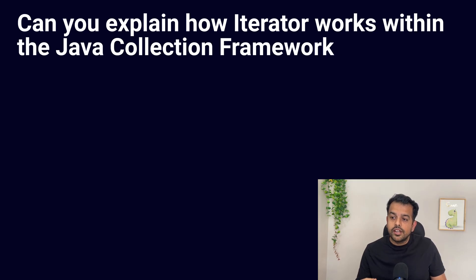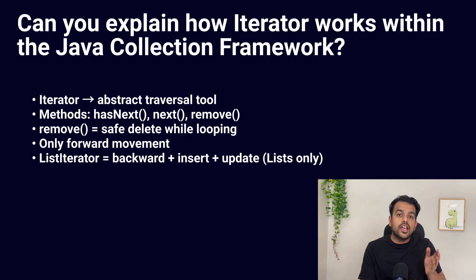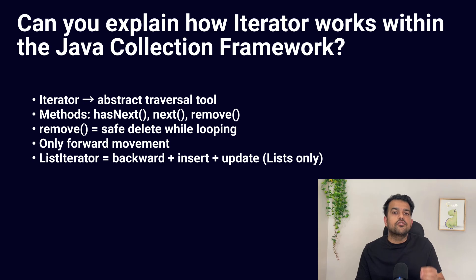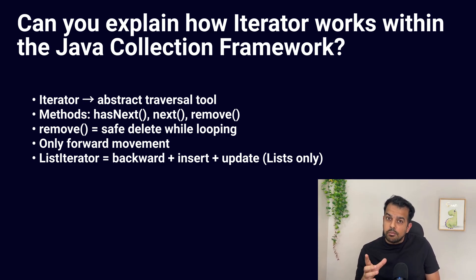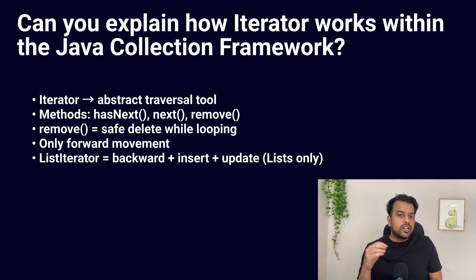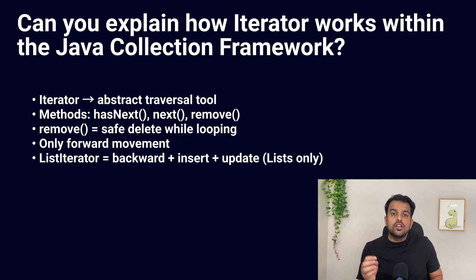The third question: can you explain how iterator works within the Java Collection Framework? Iterator is a tool that lets you go through collection elements one by one. Iterator is used to traverse a collection without exposing its internal structure — you don't care whether it is an ArrayList or LinkedList, you just use the iterator to move element by element. The common methods are hasNext() to check if there is another element, next() to get the next element, and remove() to safely remove the current element while iterating. This is very important because if you try to modify a collection directly inside a for-each loop you can easily get a ConcurrentModificationException, but using the iterator's remove() method is the safest way to delete elements while traversing.